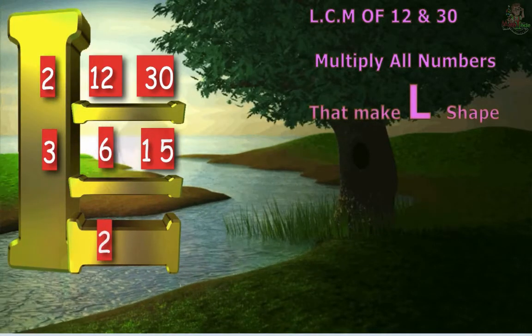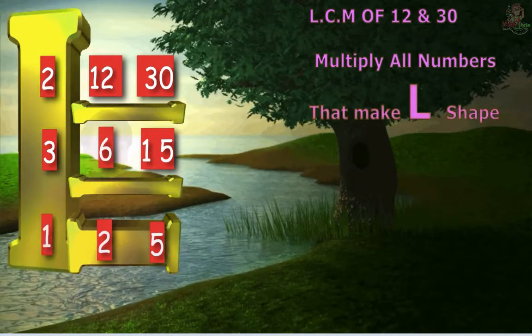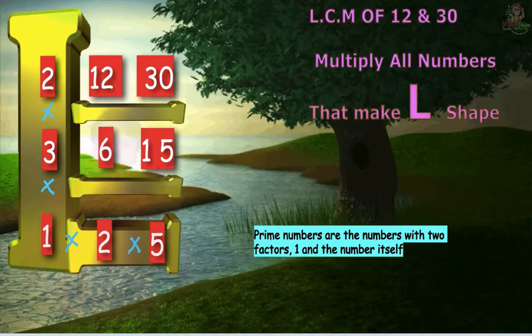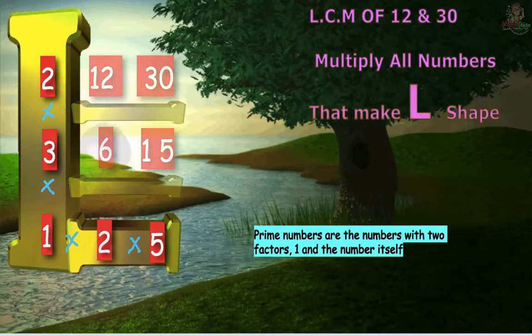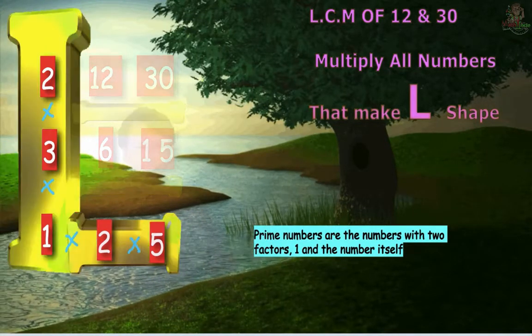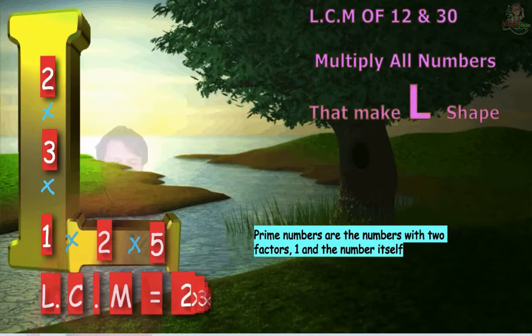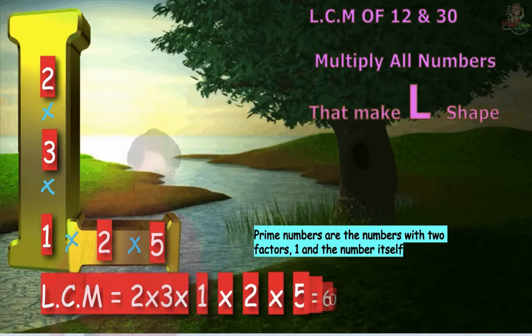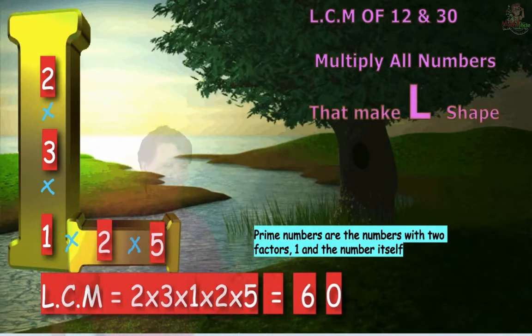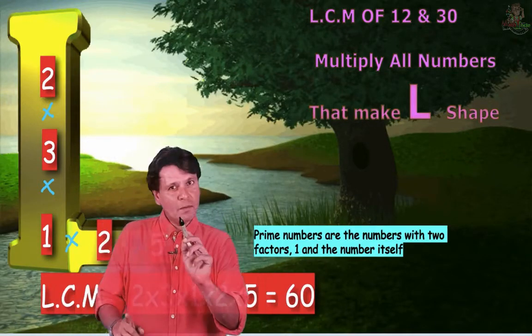3 twos are 6; 3 fives are 15. 2 and 5 are prime numbers. Now I have seen this L — look at this, this is L, and this is L. Which numbers do we have? We multiply: 2 into 3 into 1 into 2 into 5, which equals 60. So 60 is the LCM.